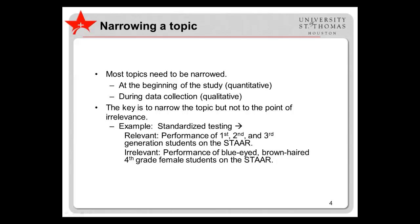A specific research topic and question or questions needs to be formulated at the beginning of the research process for quantitative studies. Qualitative studies are more flexible, although at least a preliminary focus of the research should be established prior to analyzing data. The challenging part of narrowing a topic is finding the right degree of narrowness. For example, a topic like standardized testing is way too broad to research.